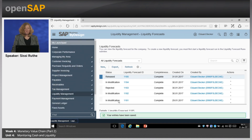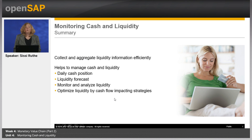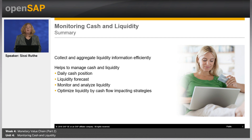Let's summarize this unit. Automated processes collect information about account balances and transactions from banks, as well as internal information on collections, disbursements, and other financial activities across different business units. Built-in analytics and reporting ensure seamless consolidation of liquidity information in today's cash position and various forecast sheets. Based on that, the system enables you to do a comprehensive liquidity analysis and to project cash shortages or surpluses for a variety of reporting criteria and timelines, helping you to optimize liquidity by cash flow impacting strategies. Next week we will focus on financial and management accounting, covering manual postings in accounting, the closing process, and relevant information for external and internal stakeholders. Thanks for your attention and see you next week.